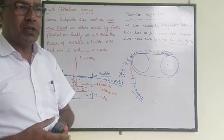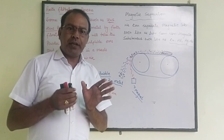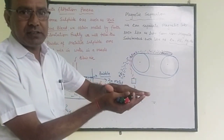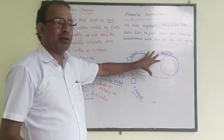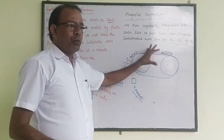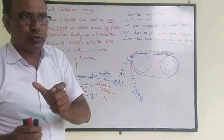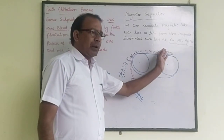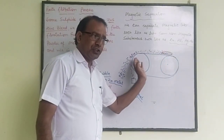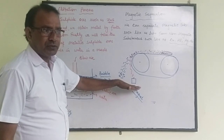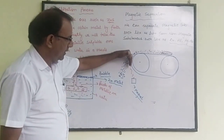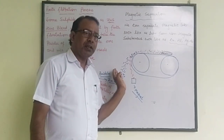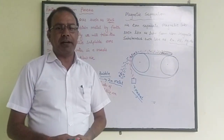This technique is known as magnetic separation. Magnetic separation is the process by which we can separate magnetic substances from non-magnetic substances. We take a magnetic separation machine, place the powder of mixed ores on the moving belt, and put a magnet just below the machine. The magnet attracts the magnetic substance while the non-magnetic substances are separated from the other end.